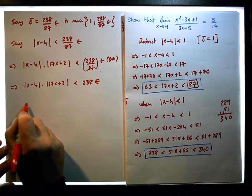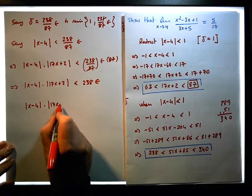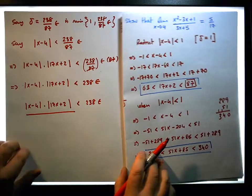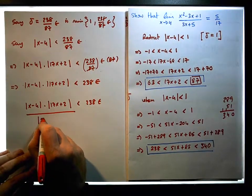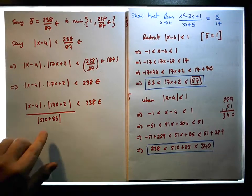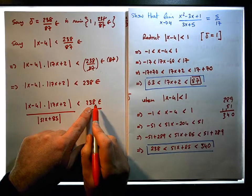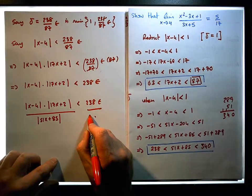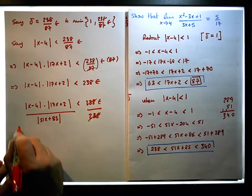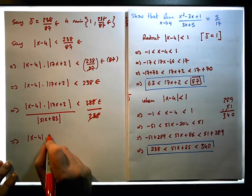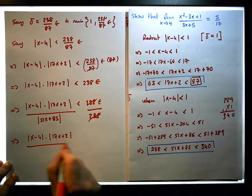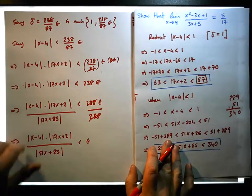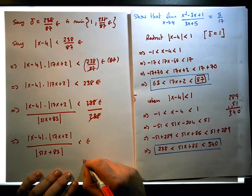Now, taking x minus 4 times 17x plus 2, which we know is less than 228 epsilon, and dividing by the absolute value of 51x plus 85 — to make this inequality hold I need to divide over here by a smaller number than 51x plus 85. We know a number smaller than that: it's 228. And so we end up with the absolute value of x minus 4 times the absolute value of 17x plus 2, all over the absolute value of 51x plus 85, is less than epsilon from our choice of delta. And that's as required.